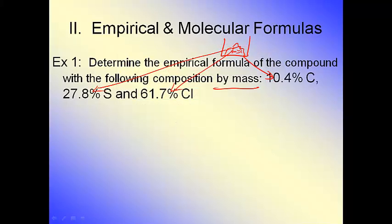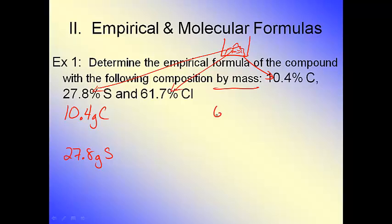By mass means by grams, so the sample is 10.4% grams of carbon. But it doesn't tell us the total sample size, so let's assume we have 100 grams. If we assume 100 grams, then 10.4 grams are carbon, 27.8 grams are sulfur, and 61.7 grams are chlorine. Making that assumption makes the problem easier because we don't have to deal with weird numbers.